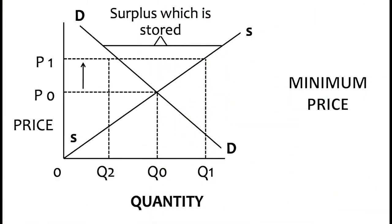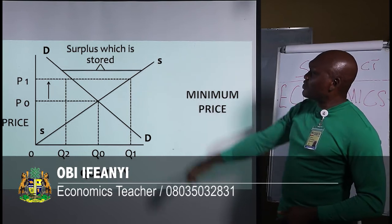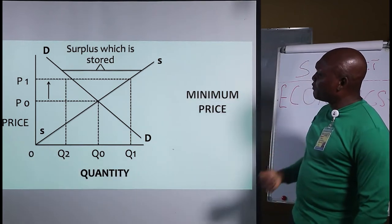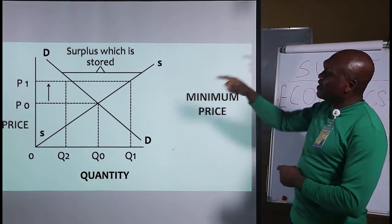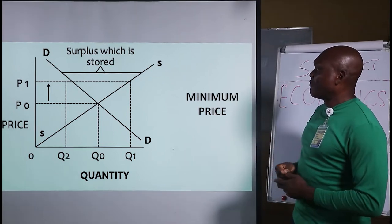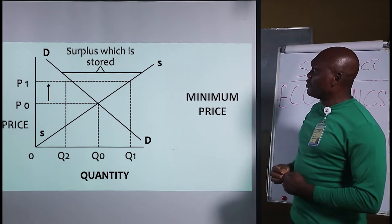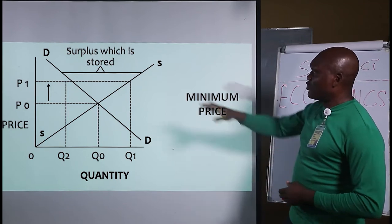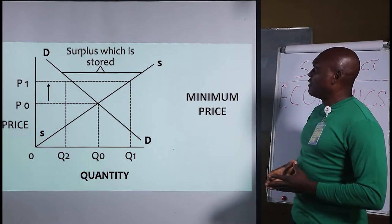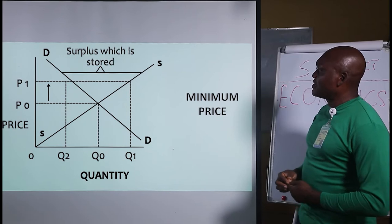Looking at the diagram for minimum price: P0 is the equilibrium price, which is the market price, while Q0 is the quantity demanded and supplied. P1 is the preset minimum price set by government — it is above the equilibrium price P0. Because of the increased price, the quantity bought contracts to Q2, while Q1 is supplied, creating a surplus which is stored. Government must buy up and store the surplus to maintain the price at P1.